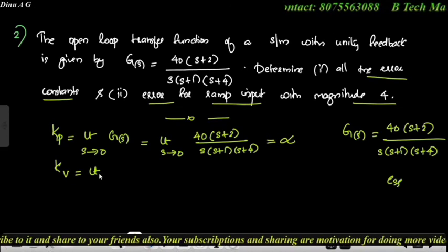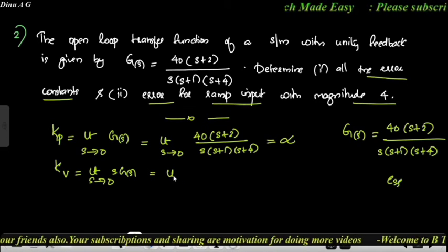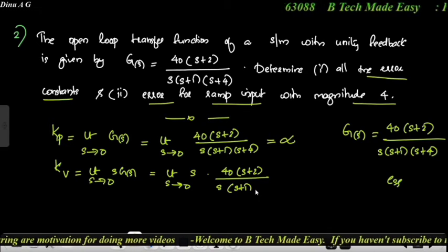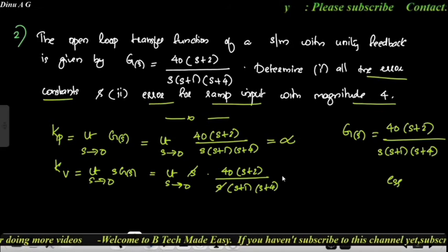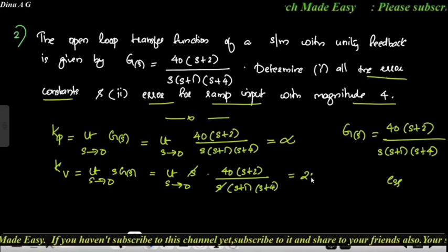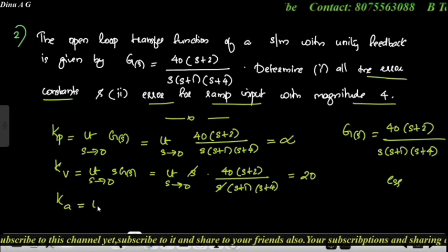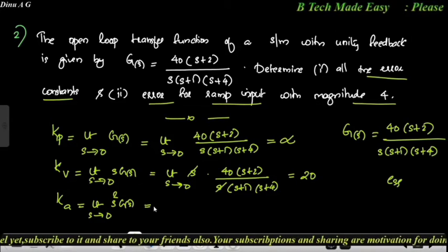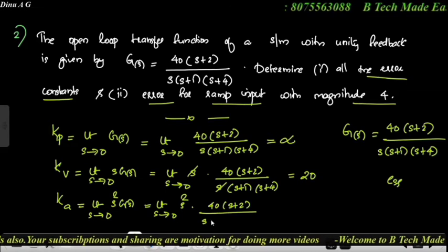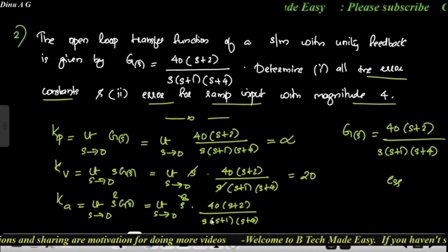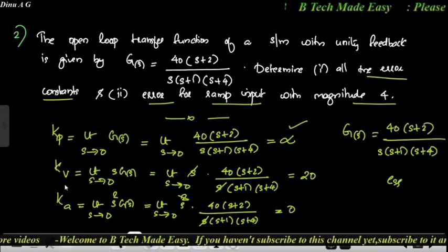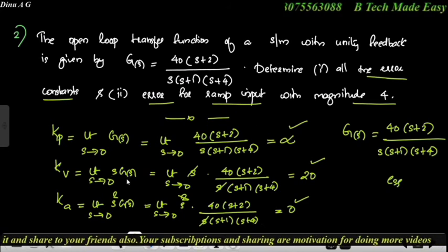Kv = limit s→0 of s·G(s) = limit s→0 of s × 40(s+2) / [s(s+1)(s+4)]. The s cancels, and substituting s=0 gives 40×2 / (1×4) = 80/4 = 20. So Kv = 20. Ka = limit s→0 of s²·G(s) = 0, since after cancelling one s there is still a remaining s in the numerator going to zero. So Ka = 0.